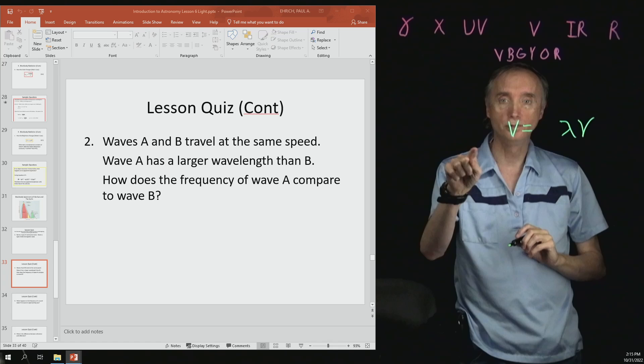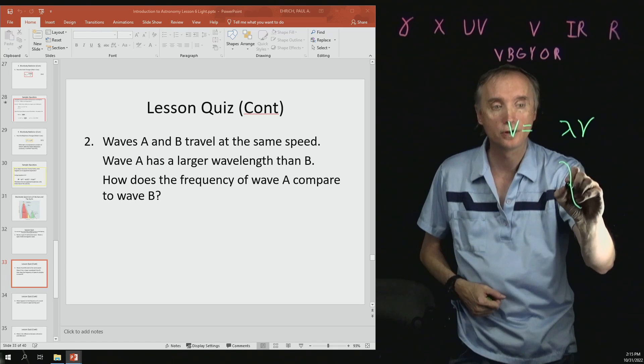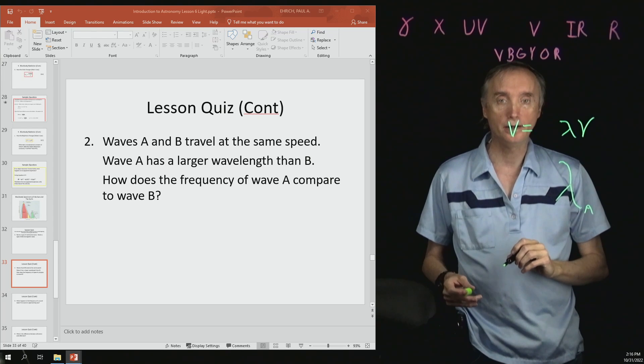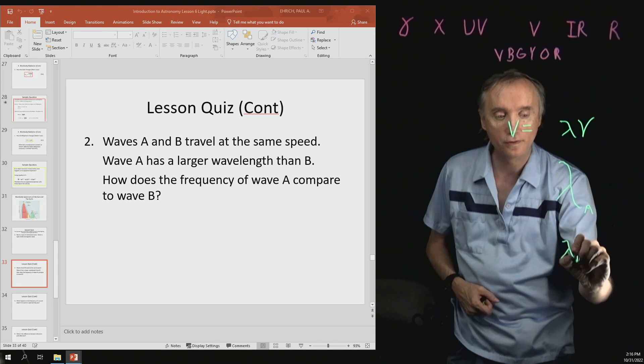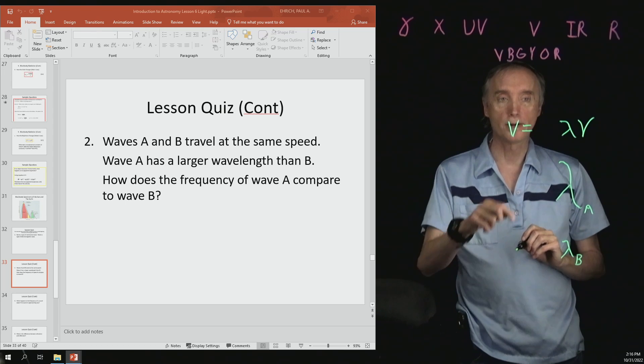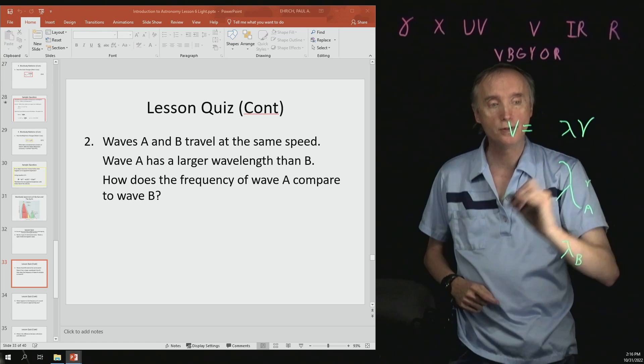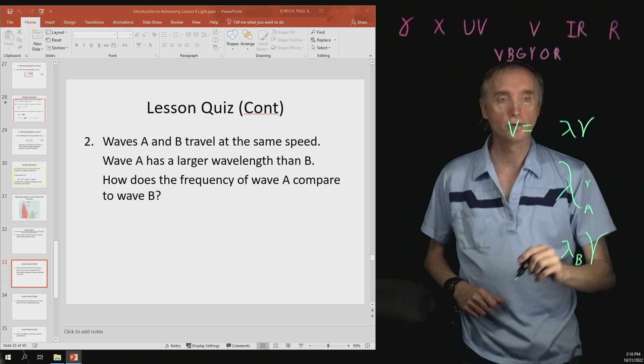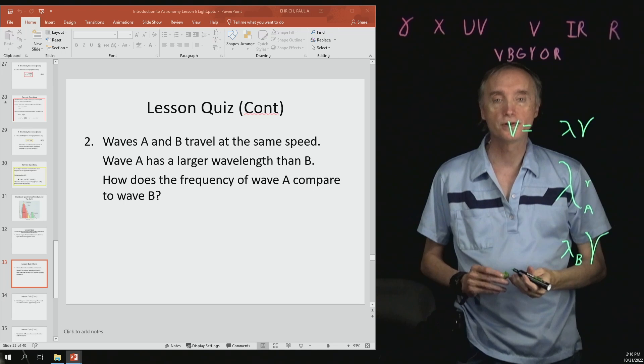And we know that wave A, so let's have a large lambda and then put an A subscript. So wavelength A is very big compared to wavelength B. So what would that mean about the frequency? So that would mean the frequency for A would have to be small and the frequency for B would have to be big. So if one letter is getting large, the other one gets small in order to compensate and then vice versa.